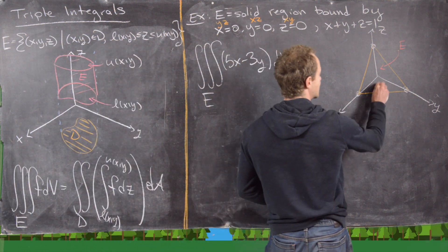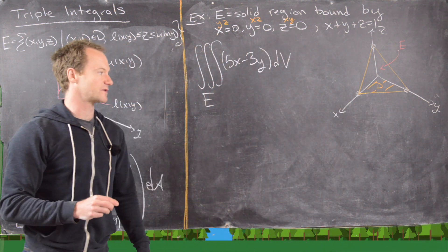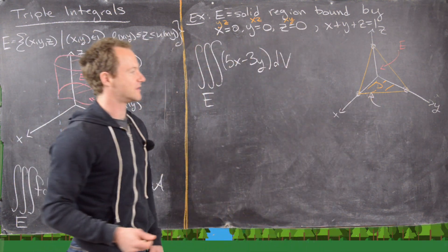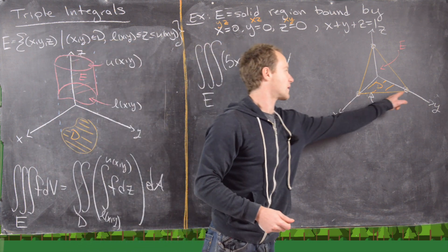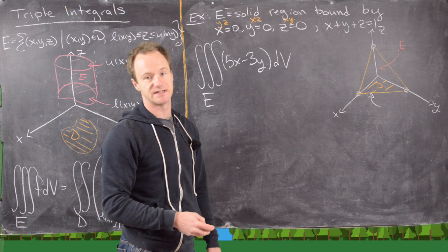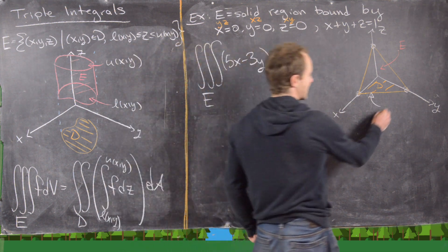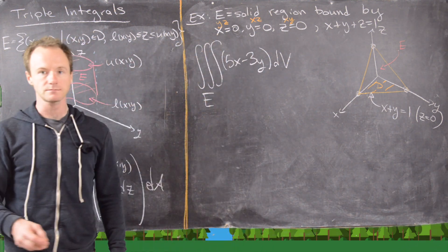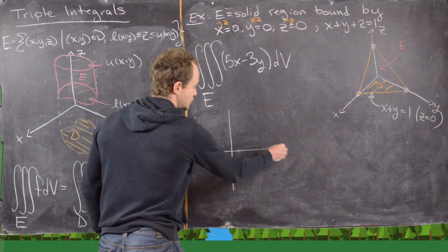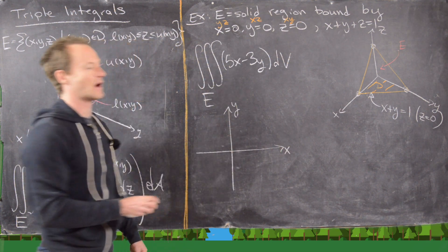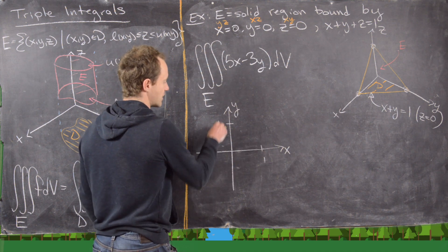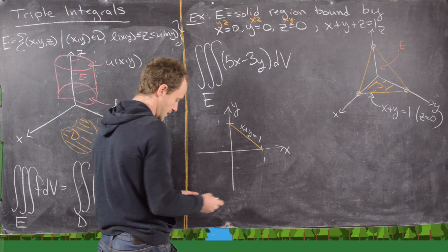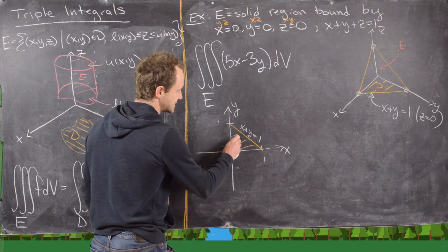Our region D is going to be down here — the shadow of this region in the plane. Notice that down here where this intersects with the x, y plane, z is equal to 0. If z equals 0 in this equation, that tells us that x plus y equals 1. So we can draw just this shadow region in the x, y plane — it goes through the points (1,0) and (0,1). This curve is x plus y equals 1, and we shade this in. This is our region D.